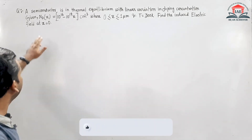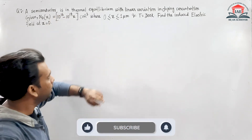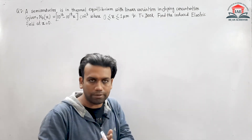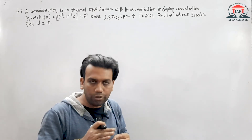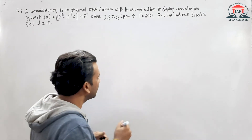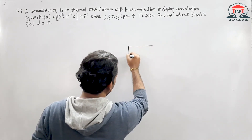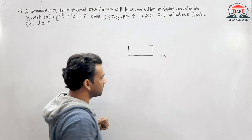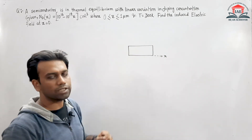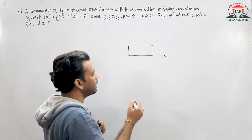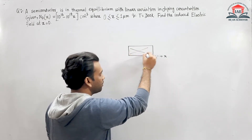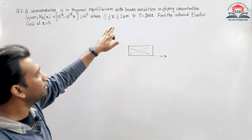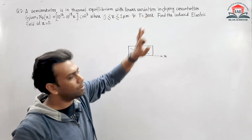In the numerical, a semiconductor is in thermal equilibrium with linear variation in doping concentration. That means the semiconductor will have a linear doping variation throughout its length, along x. The doping concentration will vary linearly along the length.